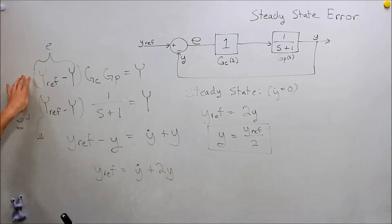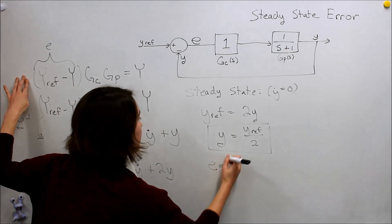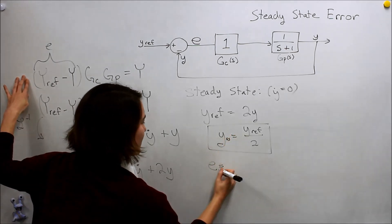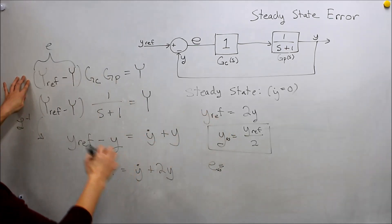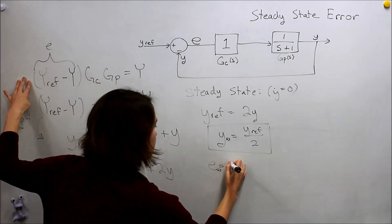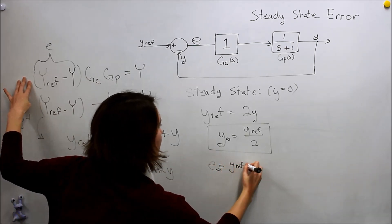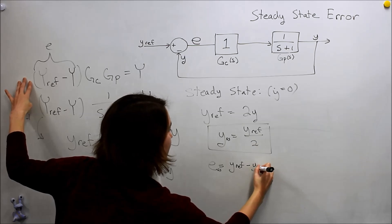Let's just go back to our definition of the error. Our steady state error would be—and I guess we'll put ss here for steady state—we would have y_ref minus our y steady state.